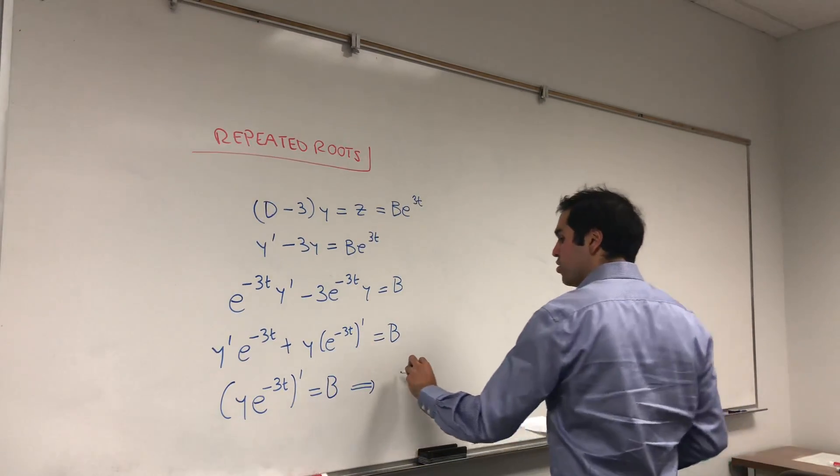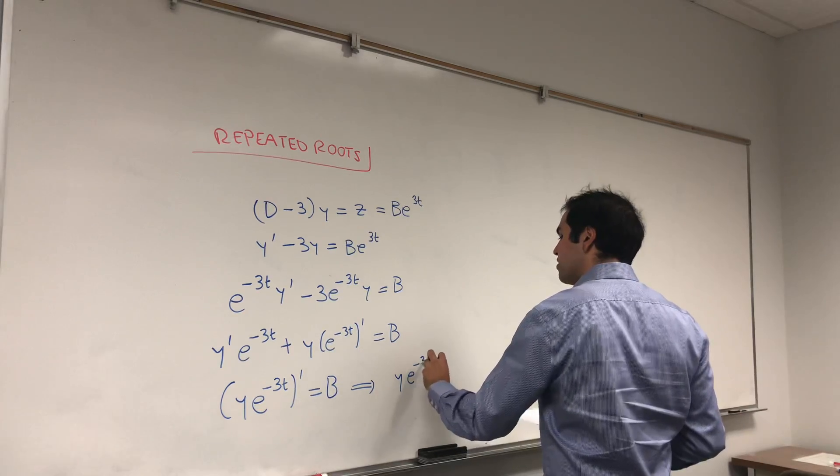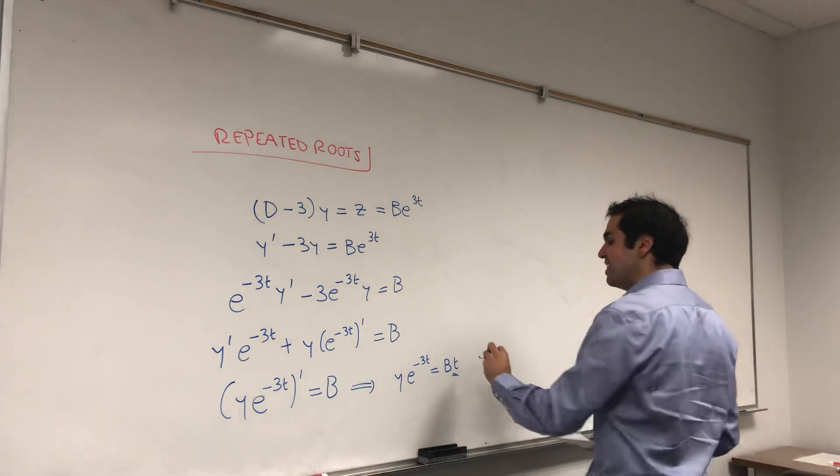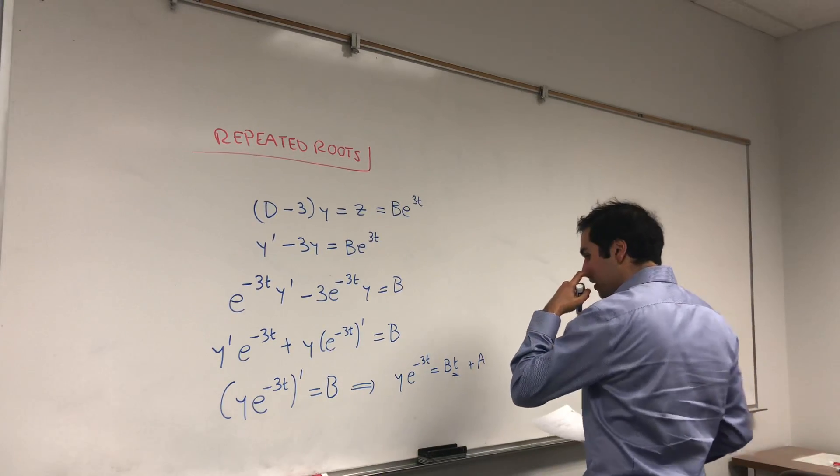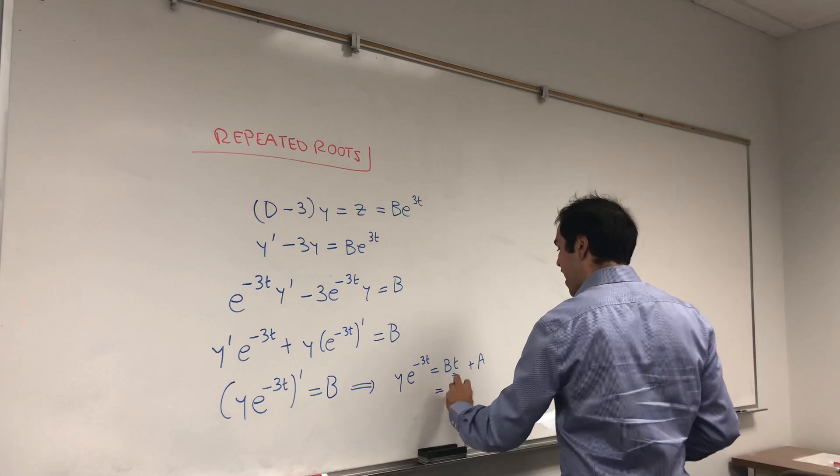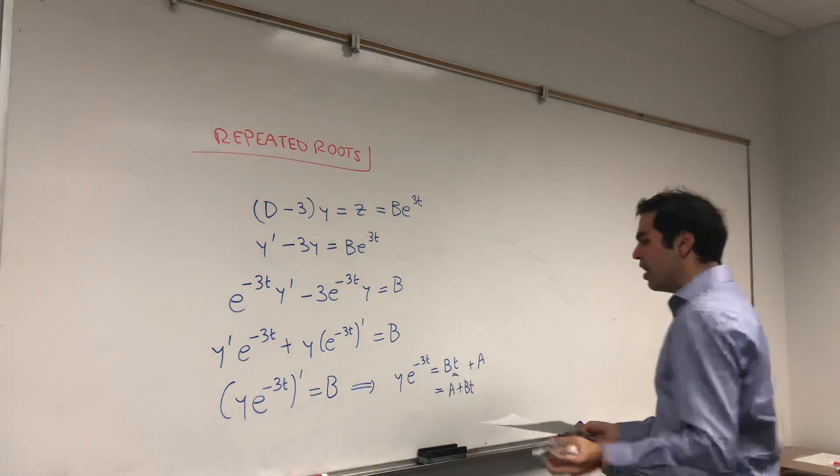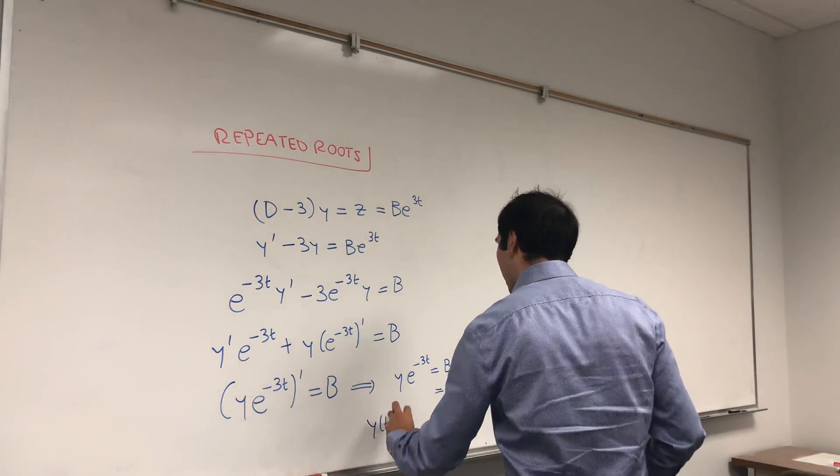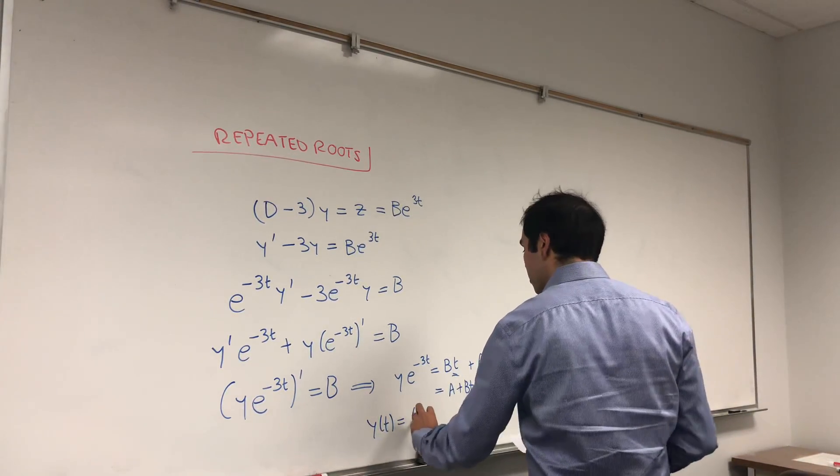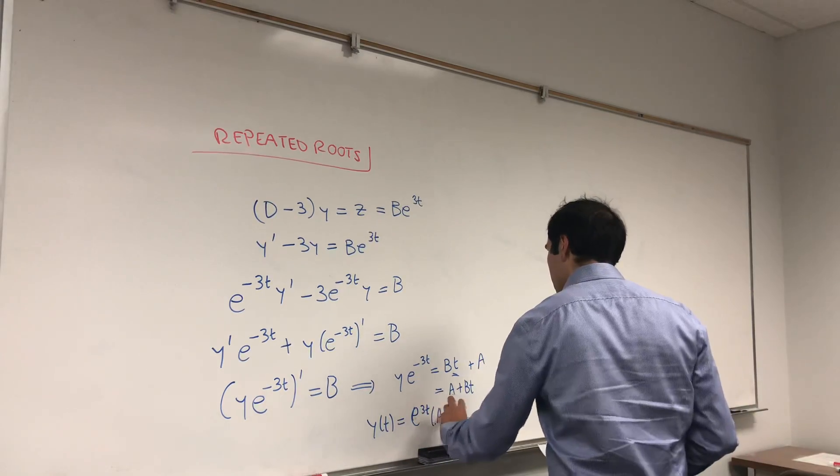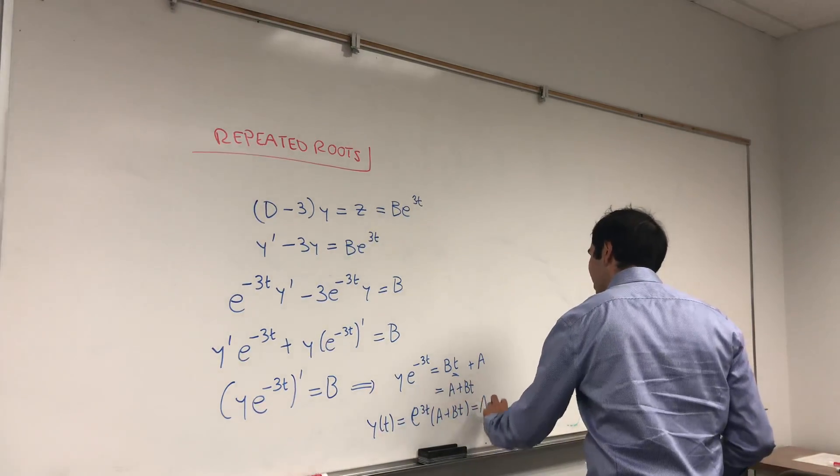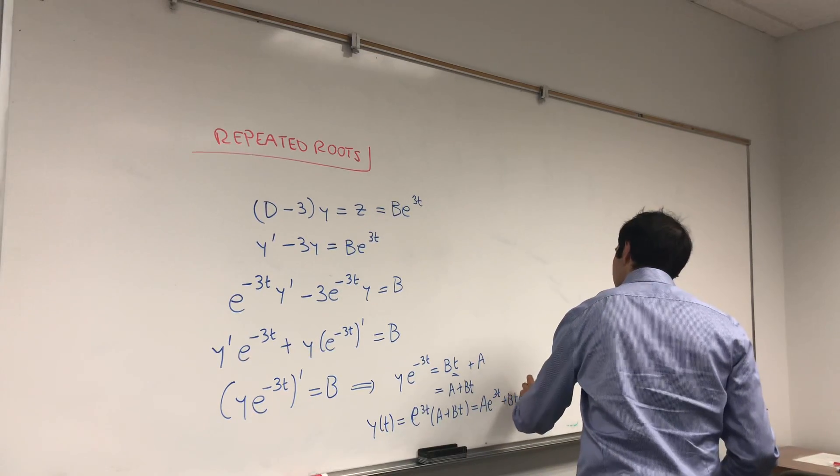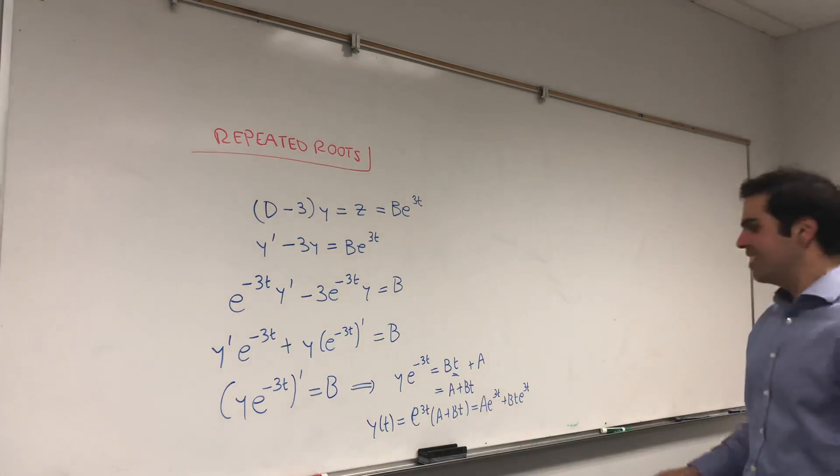And now, just integrate. So, we get y e to the minus 3t equals bt. So you see, that's where the t comes from, plus another constant a. And you can just write it as a plus bt. And, well, how do you find y? You just multiply by e to the 3t. So, y of t is e to the 3t times this, which is precisely what you want: ae to the 3t plus bte to the 3t. Ta-da!